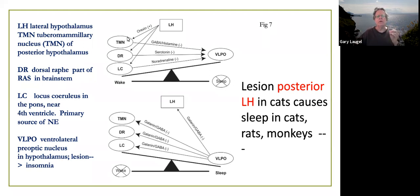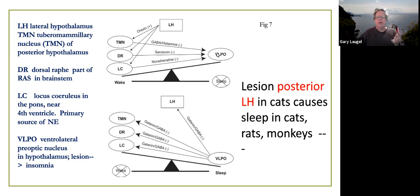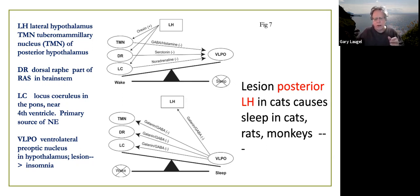When the lateral hypothalamus causes these structures to be turned on, they deliver their inhibitory message to the VLPO. When the ventrolateral preoptic nucleus has been strongly inhibited, you have a state of wakefulness — the LH is in charge of being awake. The details of the theory have not been totally worked out here.